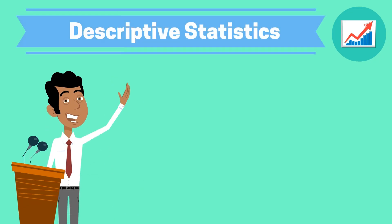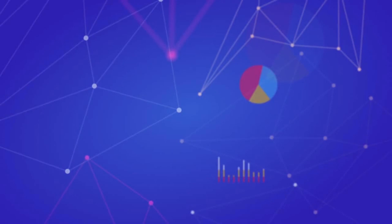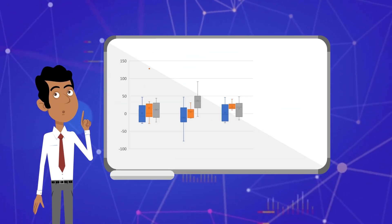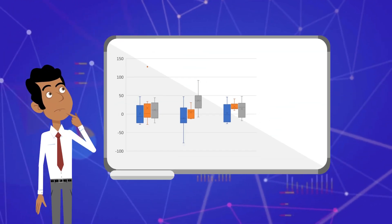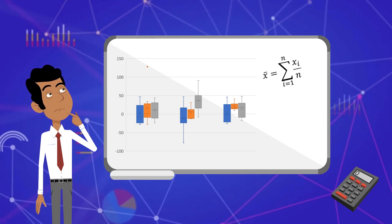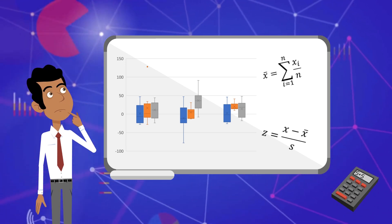Descriptive statistics is about summarizing or highlighting important aspects of our data. When people think of statistics, they often think about this area. The tools here are about describing the information you have collected, and tasks such as graphing or calculating a simple average all fall under the area of descriptive statistics.